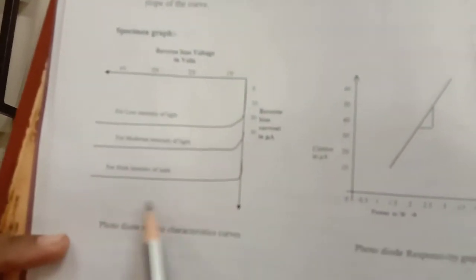Every time record the value of the current. It will be almost the same or constant. That's why we say that the current becomes saturated. Again for high intensity, repeat the same procedure. Then put all the data in the graph. You get three curves.